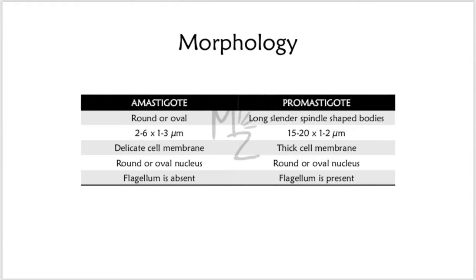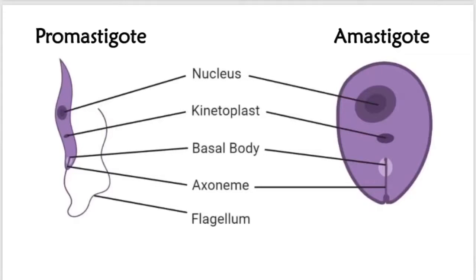Morphology. Leishmania exists in two forms: the amastigote and the promastigote. The amastigote is round or oval, measuring 2–6 by 1–3 micrometres. It has a delicate cell membrane, a round or oval nucleus, and no flagellum. In the picture on the right side, you can see the amastigote — it is round, has a thin delicate membrane, round or oval nucleus, basal bodies, and kinetoplast, with no flagellum.